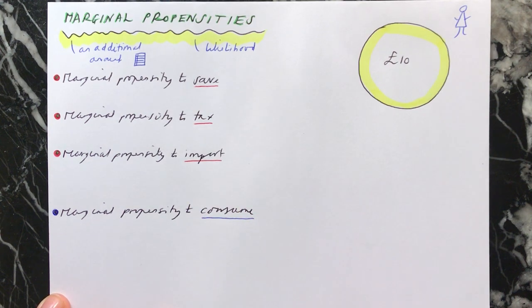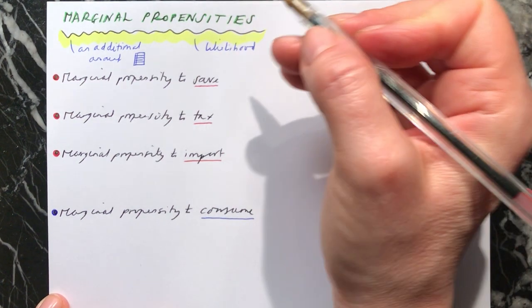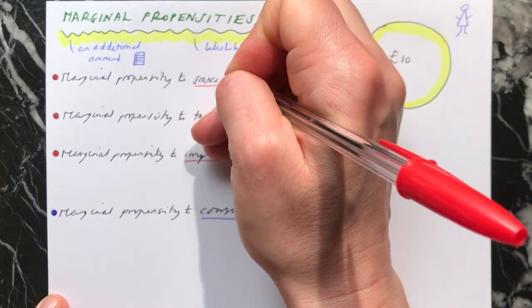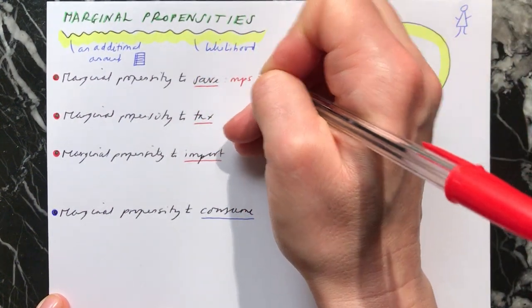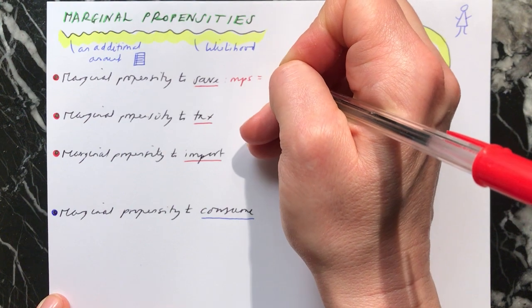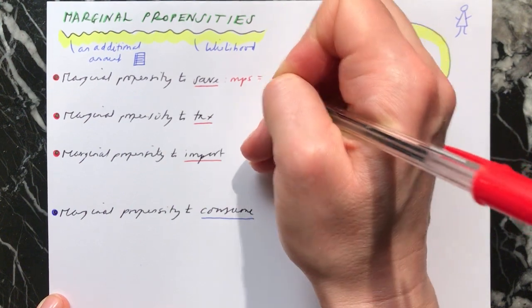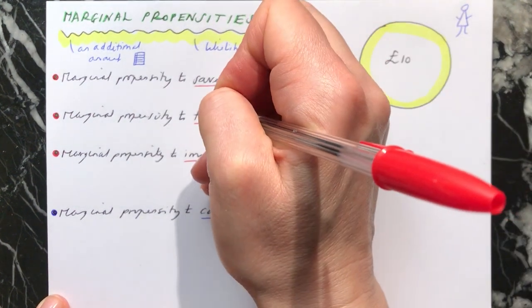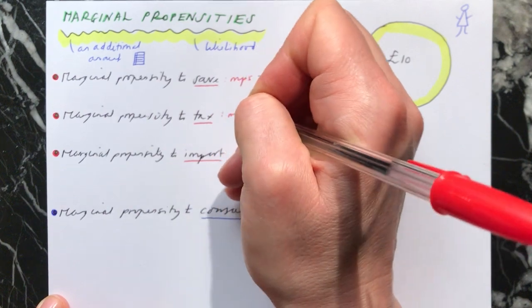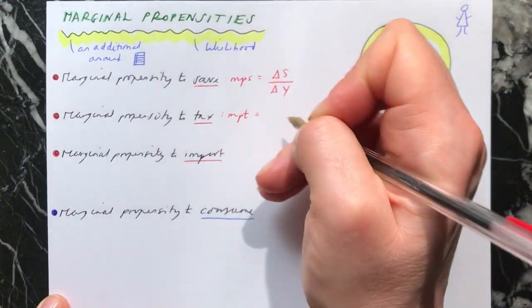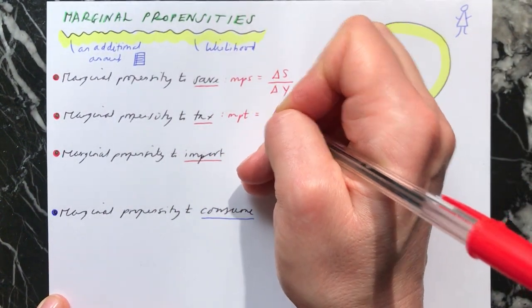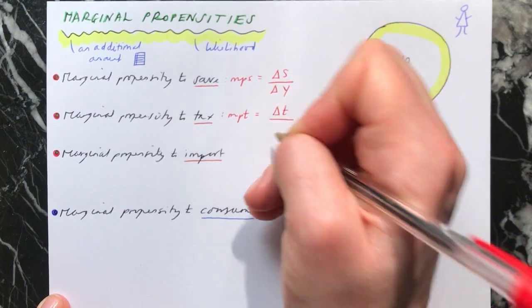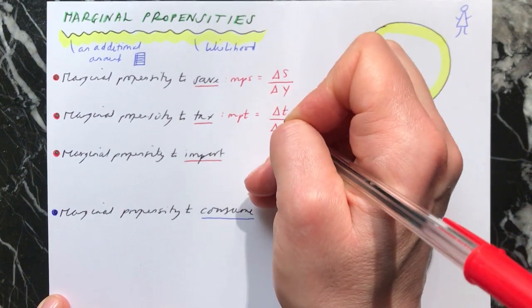So this would be on shopping if they consume. And each of these has a formula. So the marginal propensity to save, this is we call this MPS. And the formula for this, it's the change in saving divided by your change in income. The marginal propensity to tax is MPT. And that means, what will be your change in taxation when you have a change in income?